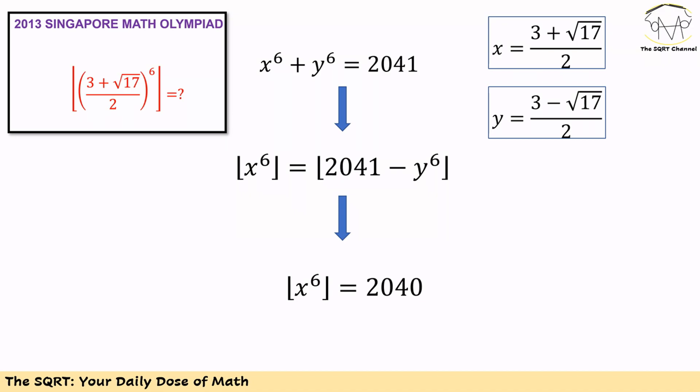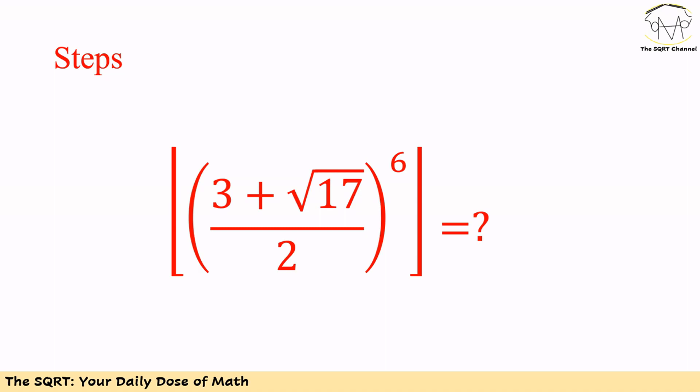At the end, floor of x to the power of 6 equals floor of 2041 minus a small number. The value of this small number is less than 1 and greater than 0. In this case the value we get from the floor operator is 2040, and that's our answer.